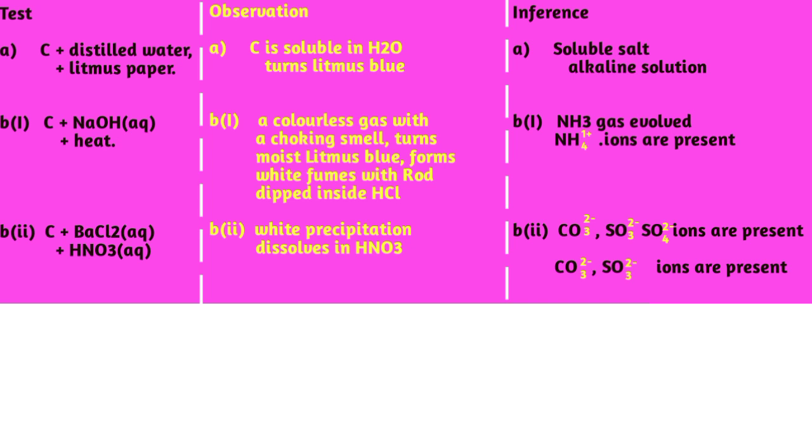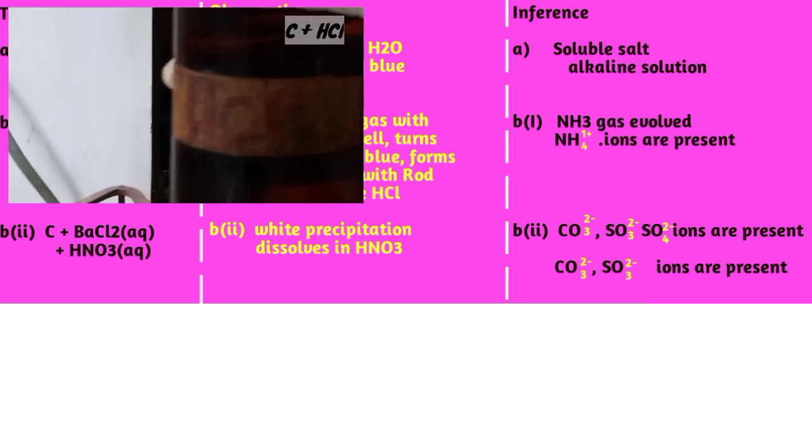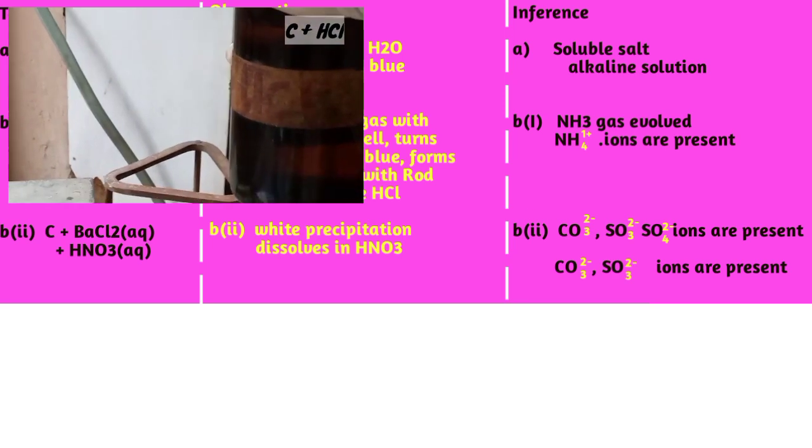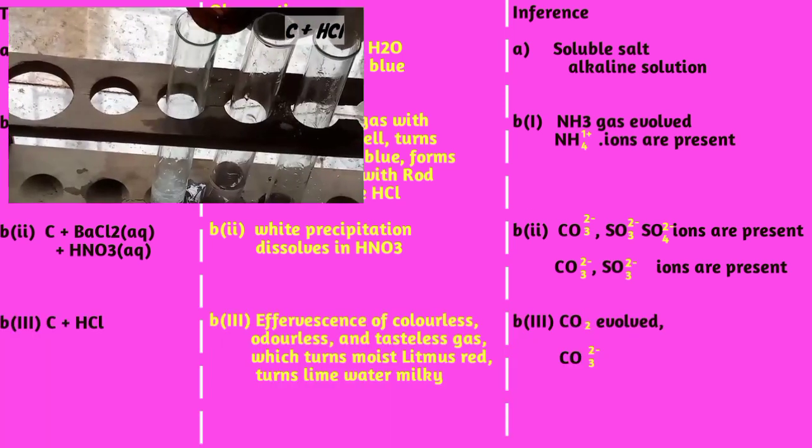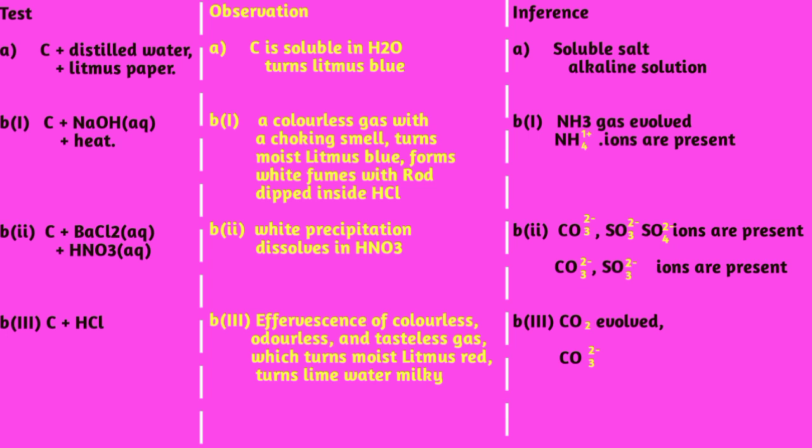The last question, Part B(iii): To about 2 cm³ of C, add few drops of hydrochloric acid. We are going to notice effervescence of gas—colorless, odorless—which turns moist litmus paper red and also turns lime water milky. Then CO2 gas is evolved.